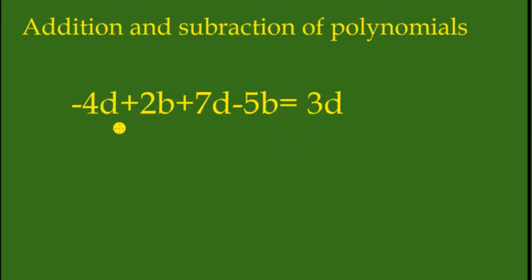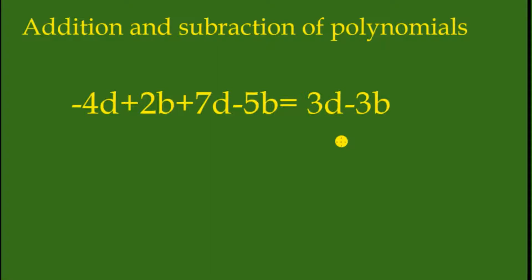Next we have 2b and 5b. This is positive 2b and this is negative 5b, so they have opposite signs — this is subtraction. This is equal to negative 3b. So our answer is 3d minus 3b.